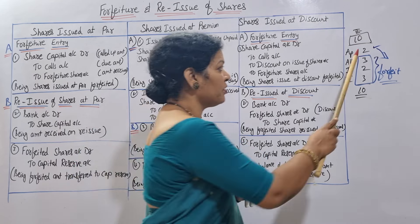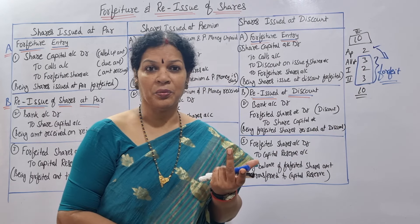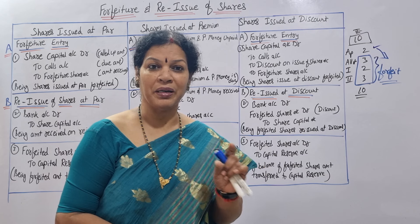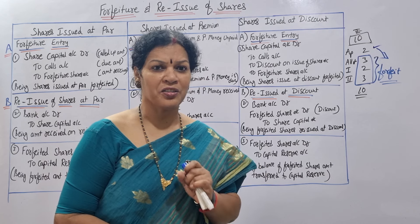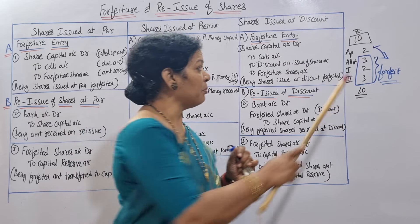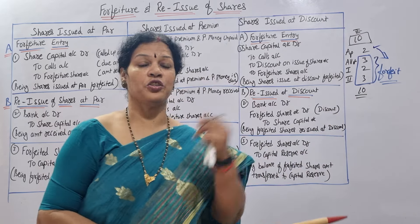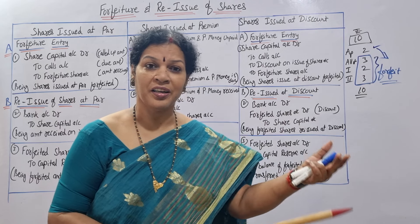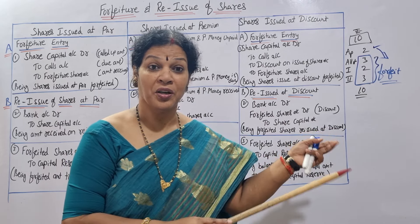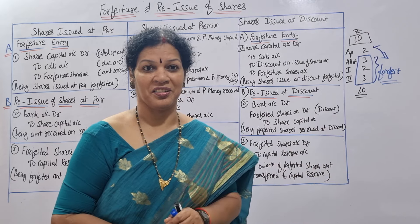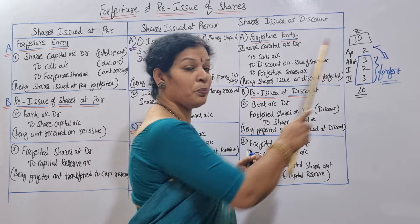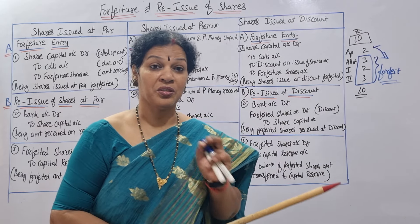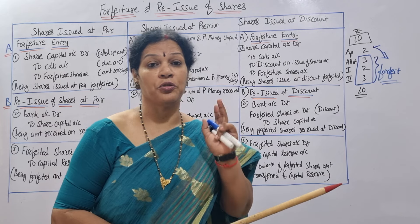This forfeited amount - 2 rupees per share - the company can reissue. For example, if 10,000 shares are there, 10,000 × 2 = 20,000 they can reissue. If 1 lakh shares are there, 1 lakh × 2 = 2 lakh they can reissue. So this is what we call forfeiture and reissue of shares.